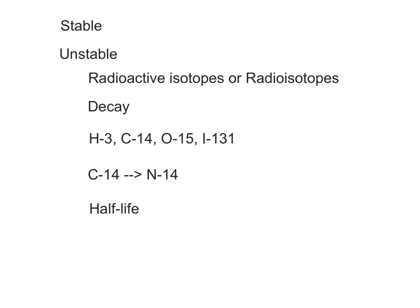The amount of time it takes for a radioisotope to decay to half of its original quantity is called its half-life. Depending upon the radioisotope and its rate of decay, this can be measured in seconds, minutes, hours, days, years, or even millions of years.